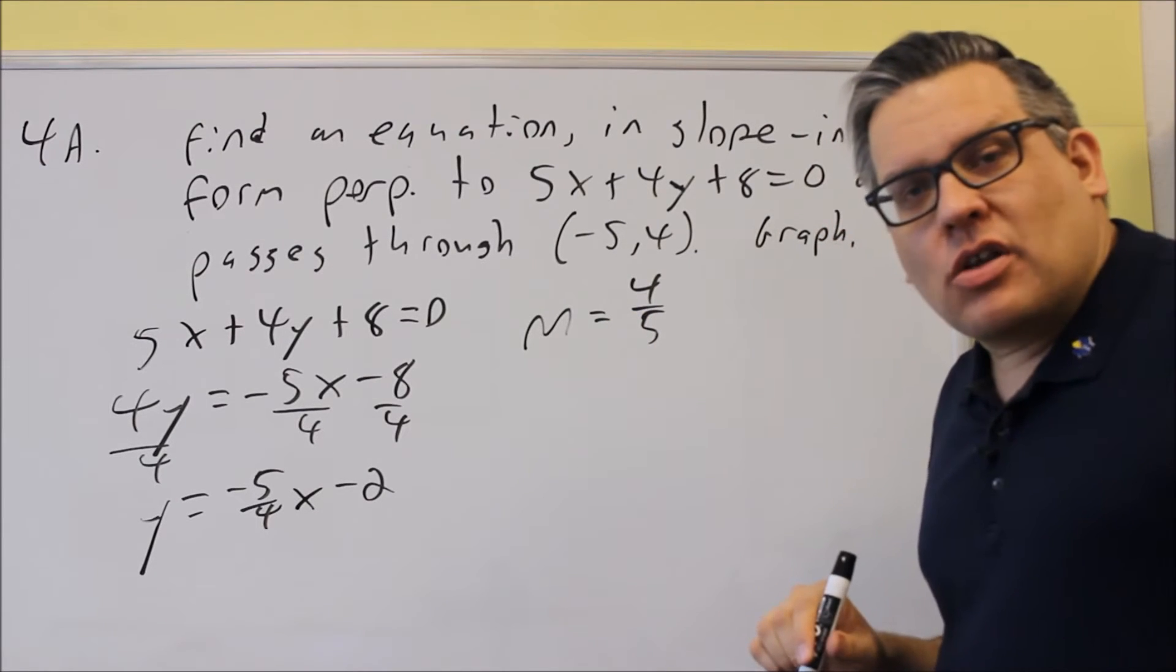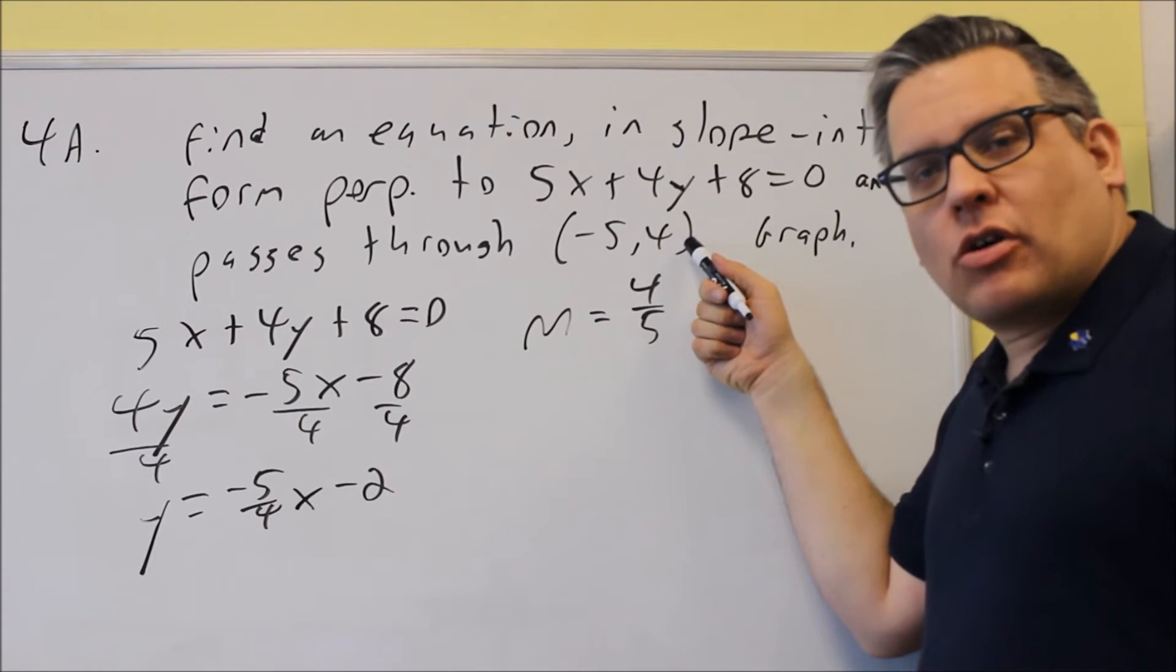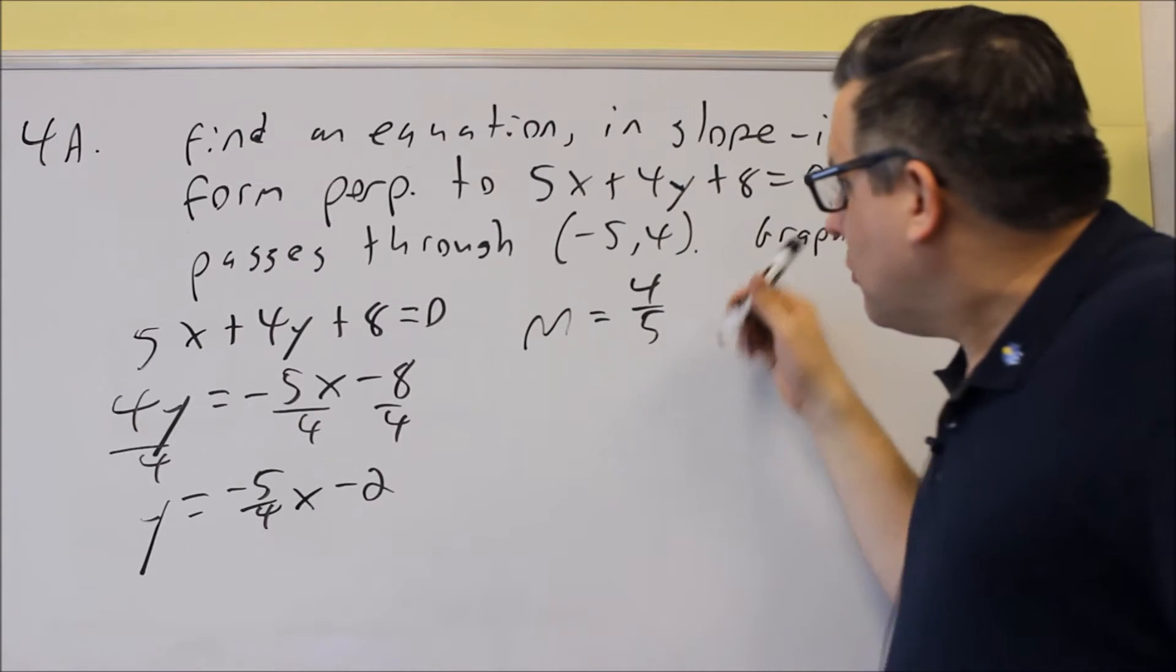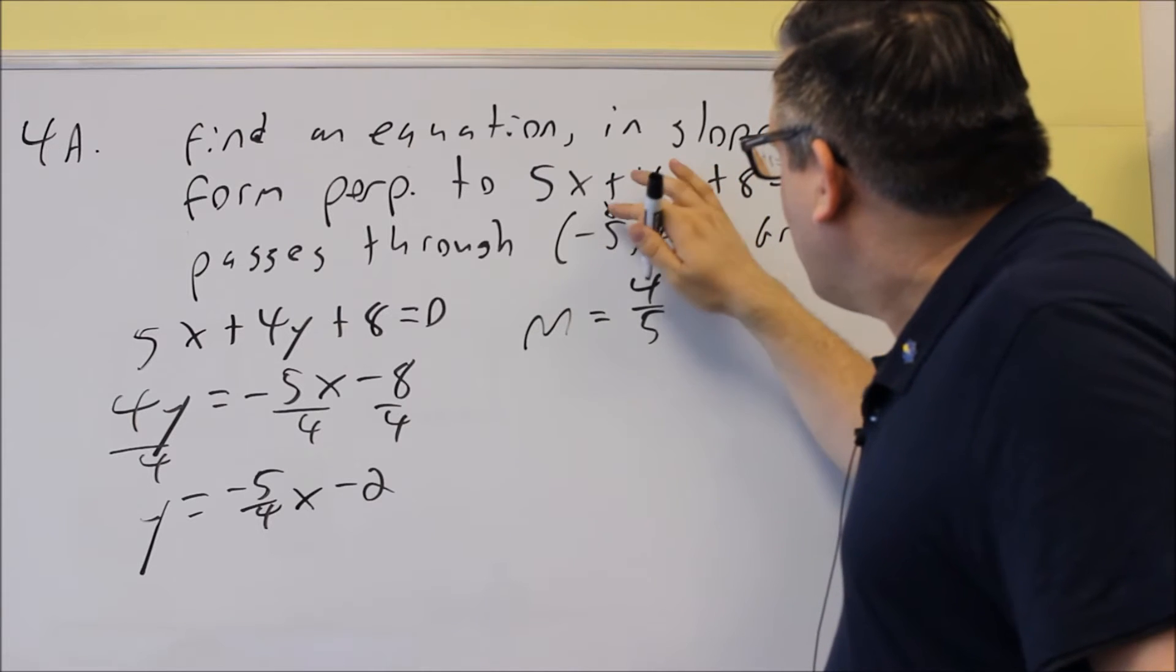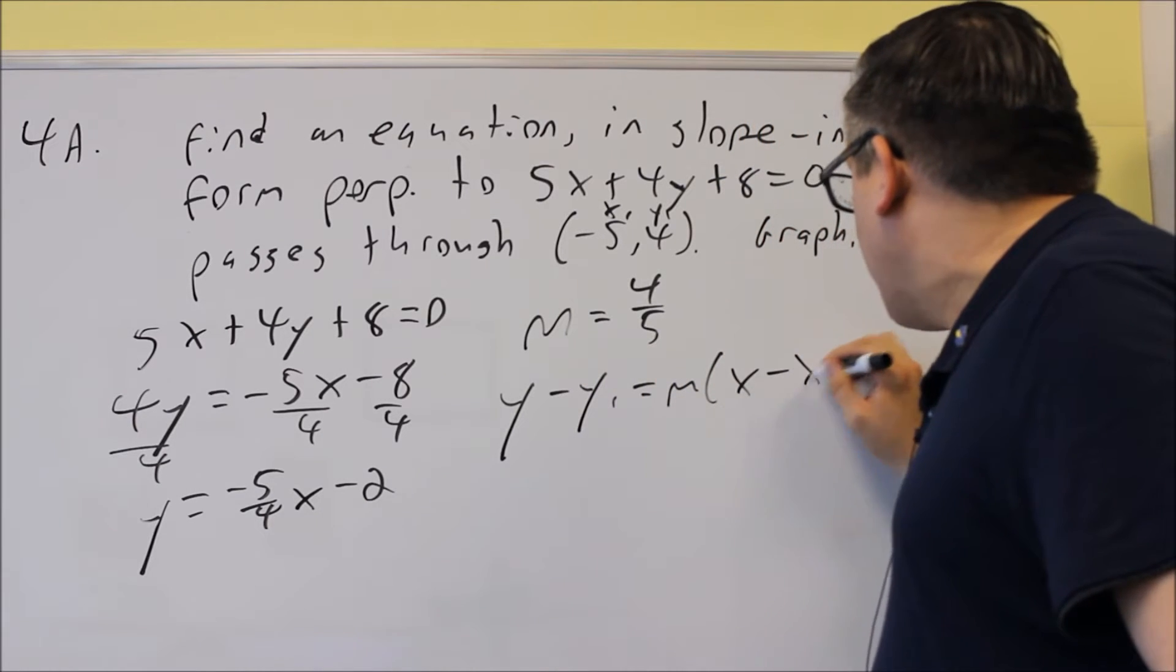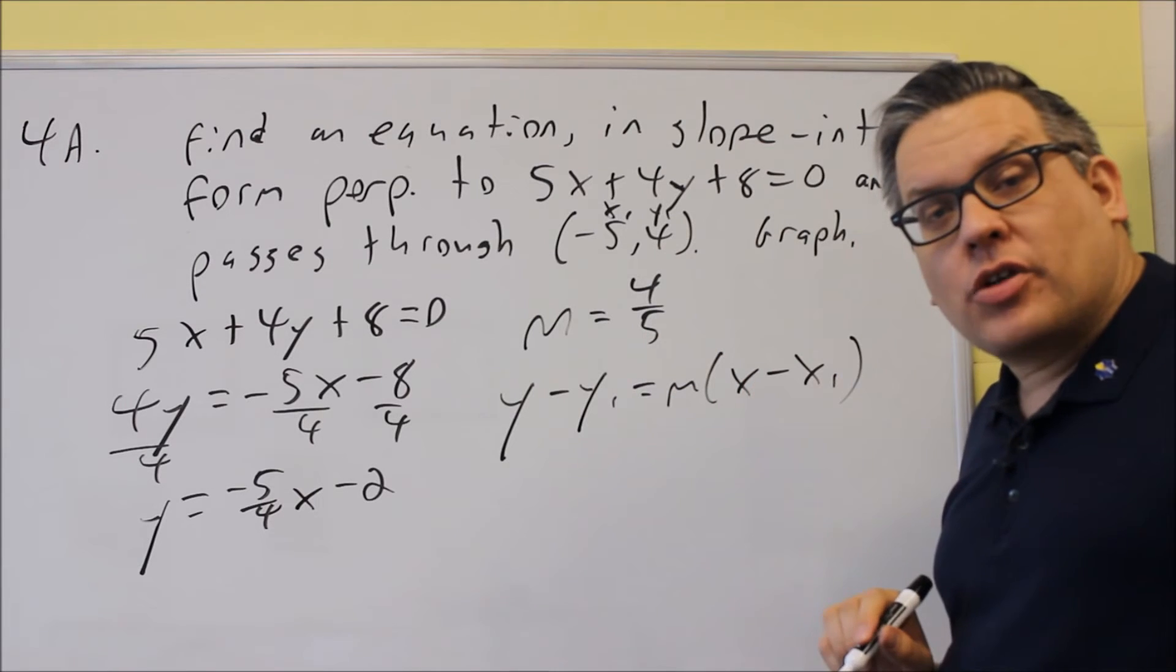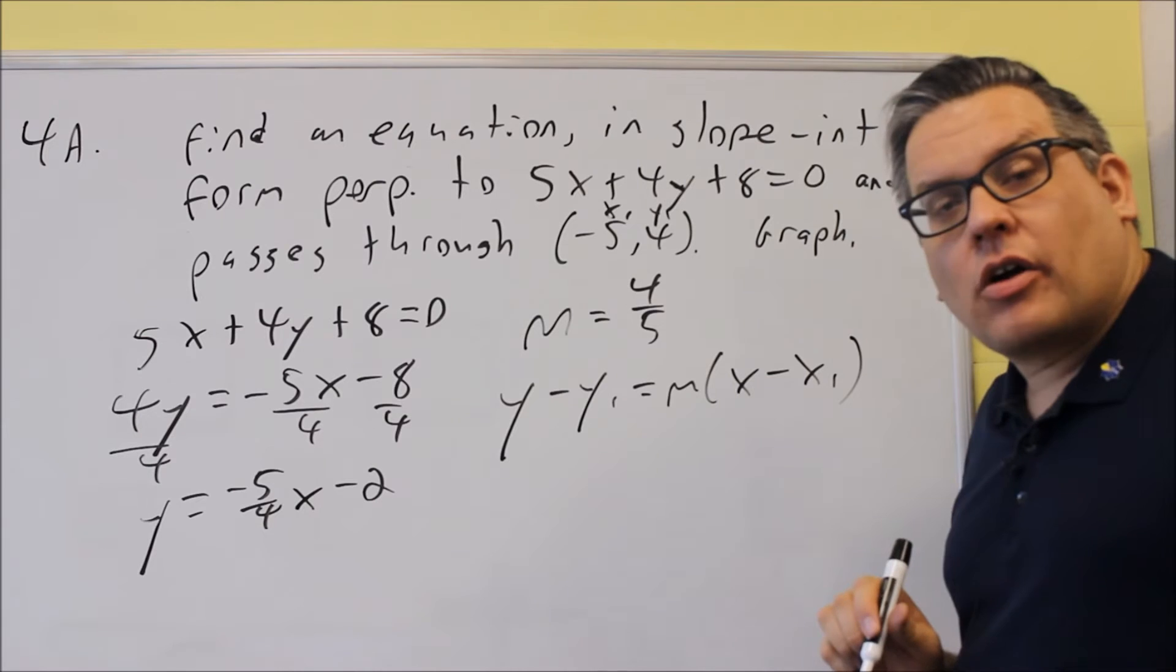So now what we're going to use is the point-slope formula. We have our original point that we want the line to go through, and we have our 4 fifths slope. So this right here, this is your x1 and y1 for each of those. So now let's use our point-slope formula. This is another formula you want to make sure that you know for the test because now we're going to plug our information back into here.